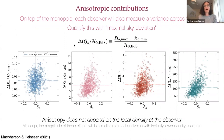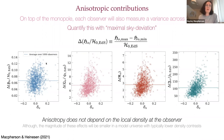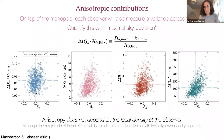We quantify this with the maximal sky deviation delta — maximum minus minimum normalized by the Einstein-de Sitter value — calculated for all 1000 observers with 300 lines of sight. Importantly, this anisotropy does not depend on the local density at the observer. Even observers sitting in regions with essentially zero overdensity — reflecting the mean density of the universe — can still measure 4% to 13–14% variance across the sky in the Hubble parameter, and much larger variance for the deceleration parameter, curvature, and jerk.